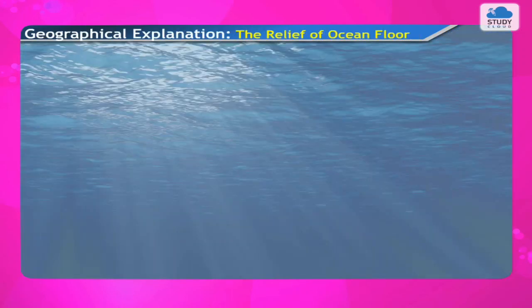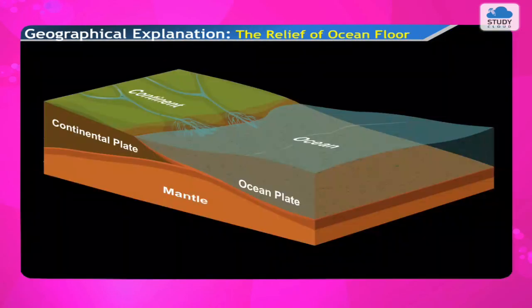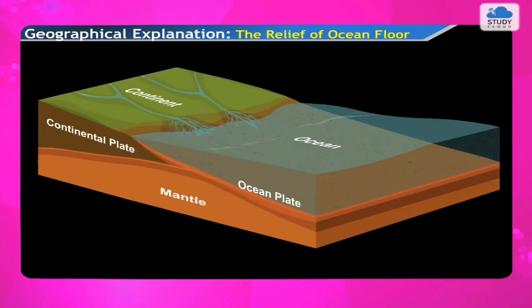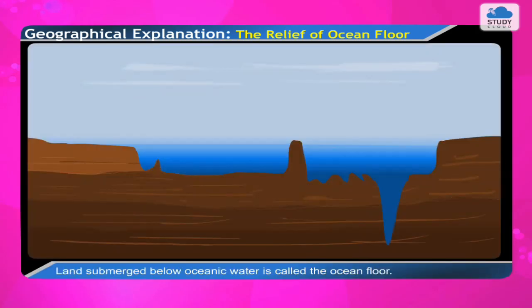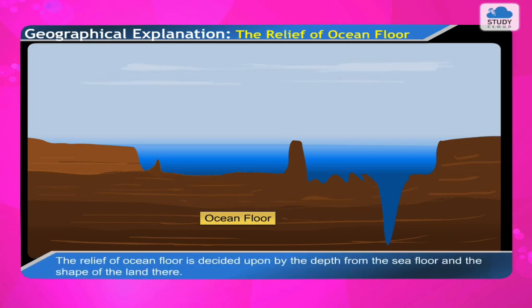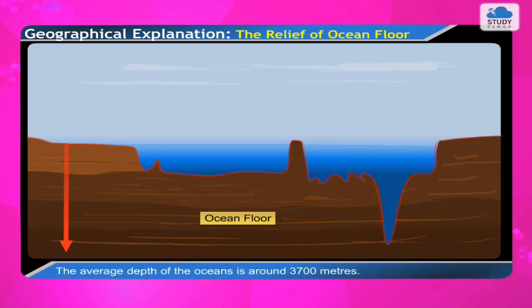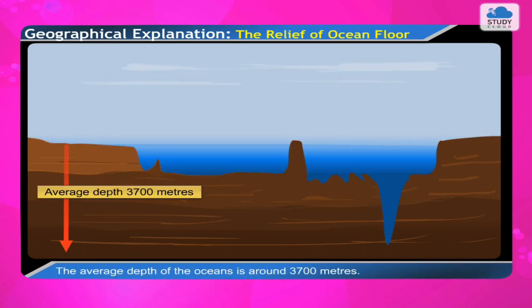Land submerged below oceanic water is called the ocean floor. The relief of the ocean floor is decided by the depth of the sea floor and the shape of the land there. The average depth of the oceans is around 3,700 meters.